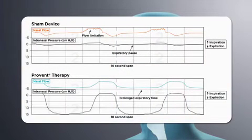These PSG images show a patient with and without ProVent Therapy. The top panel shows an untreated patient. There is clear inspiratory flow limitation. Intranasal pressure is zero after expiration, and there is a long end-expiratory pause.